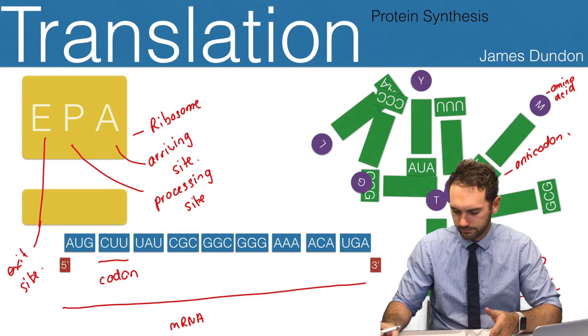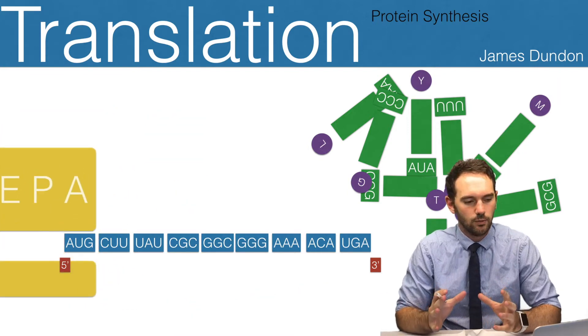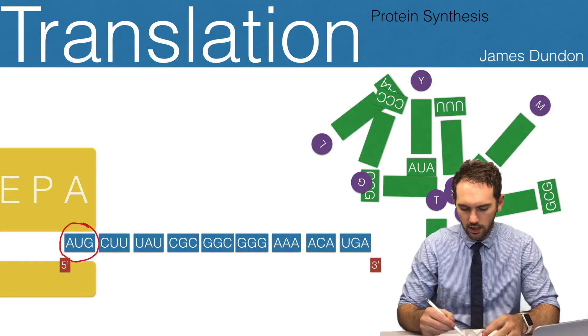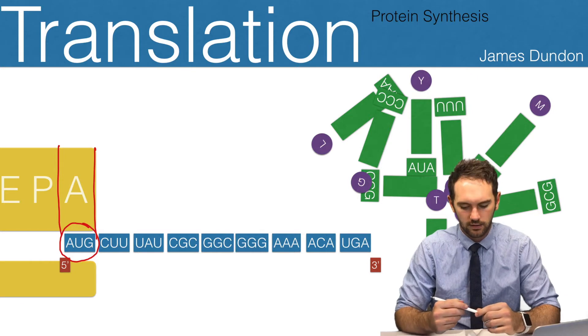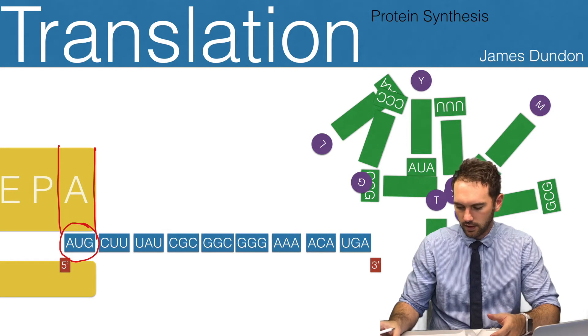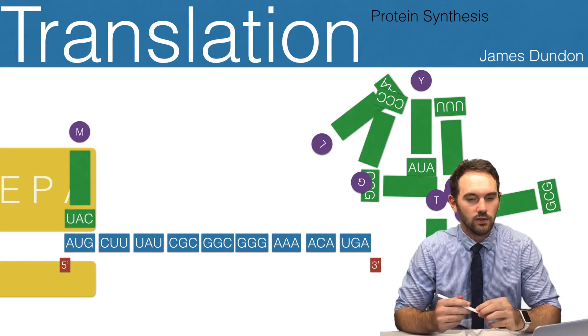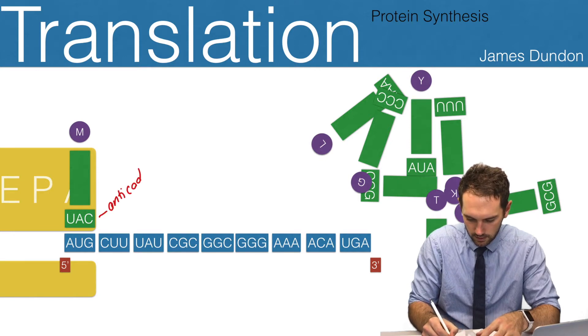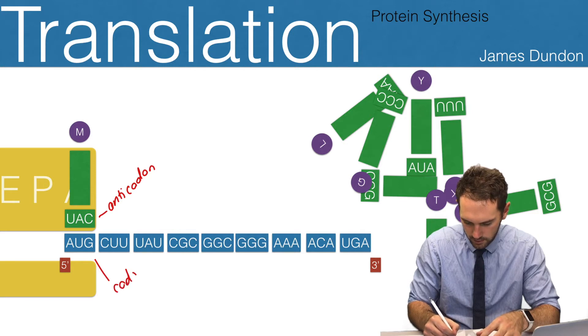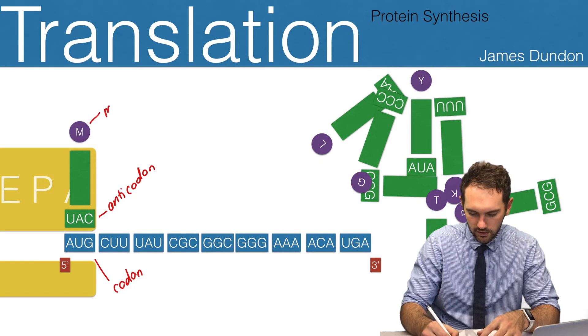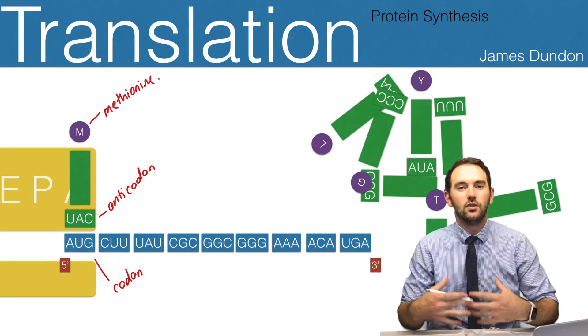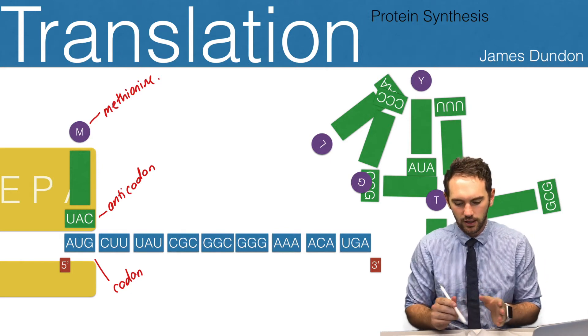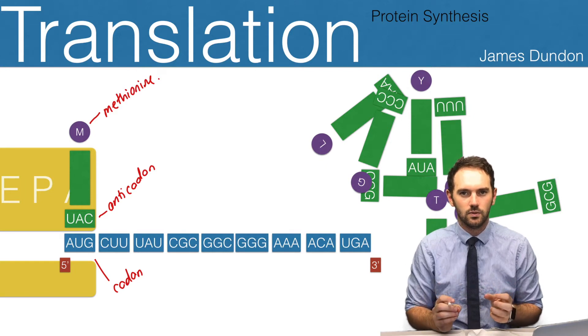Let's have a look at the first step. You can see that the ribosome has moved into position and we now have the AUG lining up with the arriving site. The thing that's going to arrive is our first transfer RNA molecule. The anticodon is complementary to the codon, and it carries that specific amino acid, which in this case is methionine. Methionine is always our starting amino acid for all of our proteins. Our ribosome will always scan along our mRNA to find that first AUG, and that's the position where it starts.